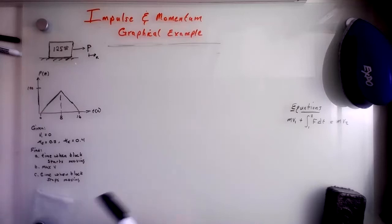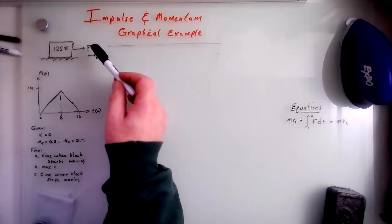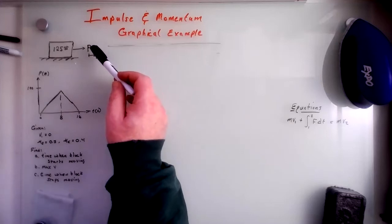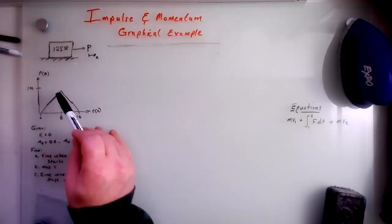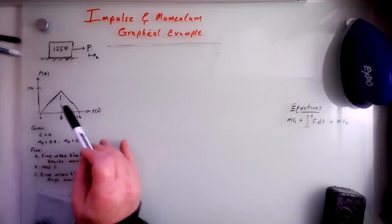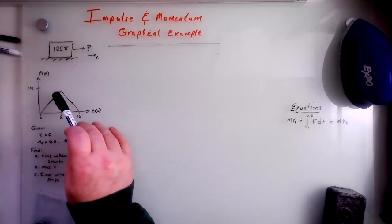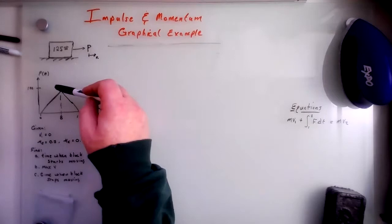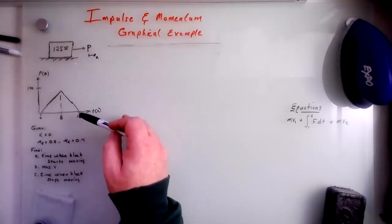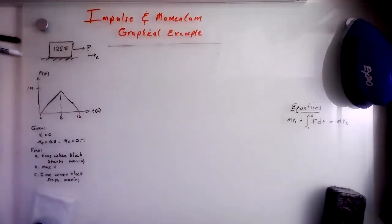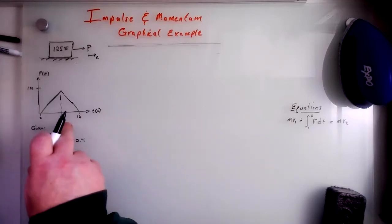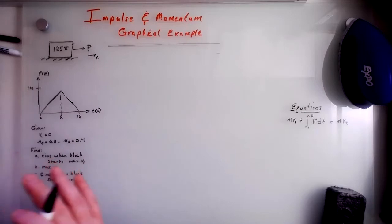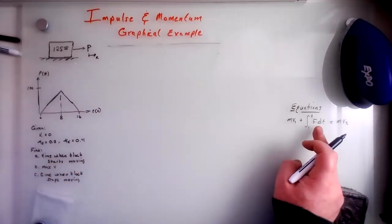On this problem, we have a block that is subjected to p. And p is represented here. So for the first eight seconds, p is increasing from 0 to 100. For the next eight seconds, p is decreasing from 100 to 0. Not to be confused with a time-dependent p, this represents a solution to this integral.